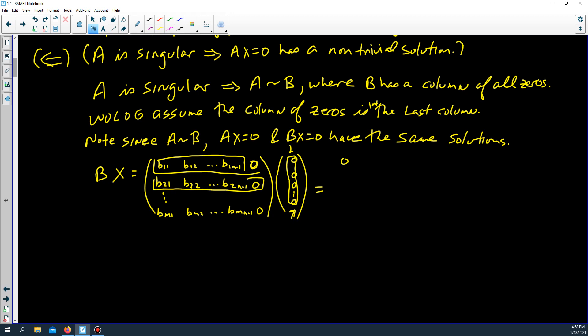it is going to be true for every row. This row times the only one column is going to give you a sum of a lot of zeros plus zero times seven, which is also zero. And this is going to go all the way down.